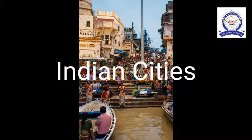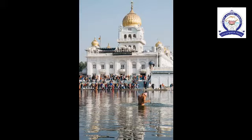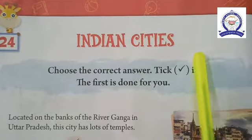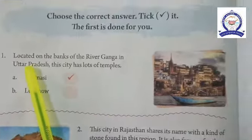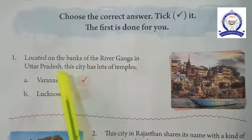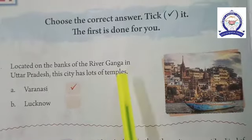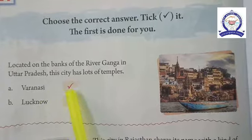Indian Cities. Why are cities more populated than villages? Because of good amenities. Cities become more popular because of their location — either near a riverbank, sea, or temple. Lesson 24: Indian Cities — choose the correct answer. The first one is done: this city is located on the banks of river Ganga in Uttar Pradesh and has lots of temples. The answer is Varanasi.